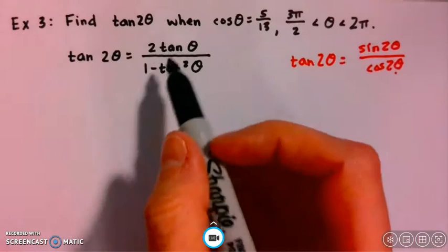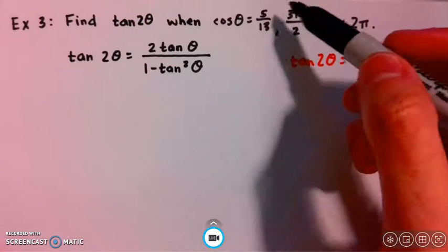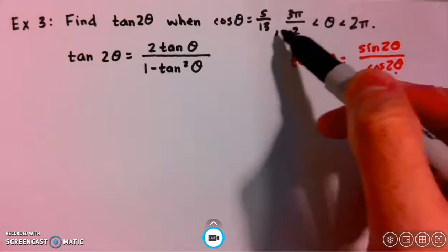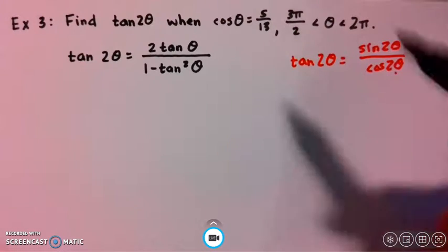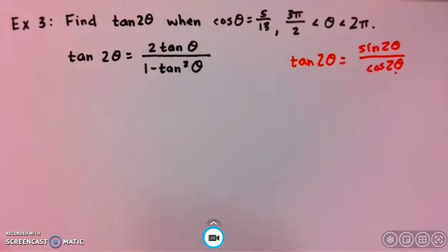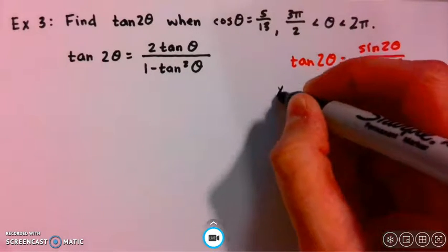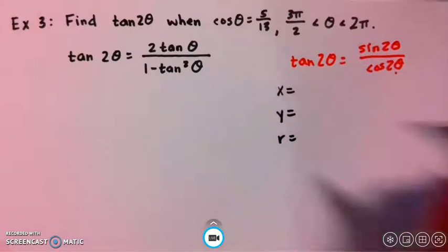Let's take a look at what we have. We have information about cosine. Remember that cosine is x over r, and we're in the fourth quadrant because we're between 3 pi over 2 and 2 pi. In the formula, I need values for tangent, and I don't have those values. So we're going to make a little chart here and find x, y, and r.